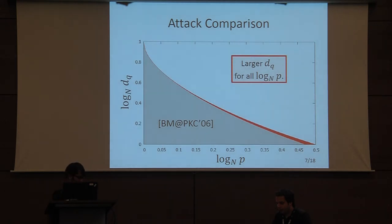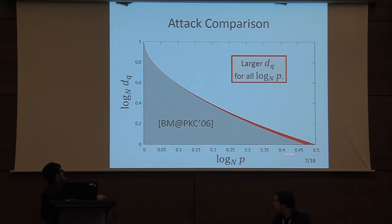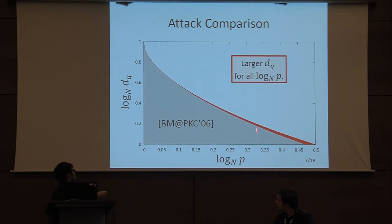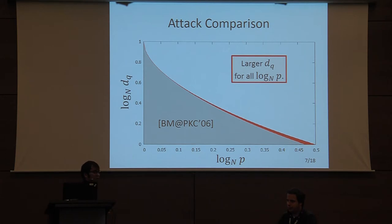This figure compares the attack conditions for the first attack — the small dq attack. We compare Bleichenbacher-May's attack and our improvement. The x-axis represents the size of P, and the y-axis represents the size of dq. For both attacks, when P becomes large (close to N^0.5), the recoverable size of dq becomes smaller. Bleichenbacher-May's attack works when P is smaller than N^0.468, but our attack works when P is smaller than N^0.5 — achieved for the first time.